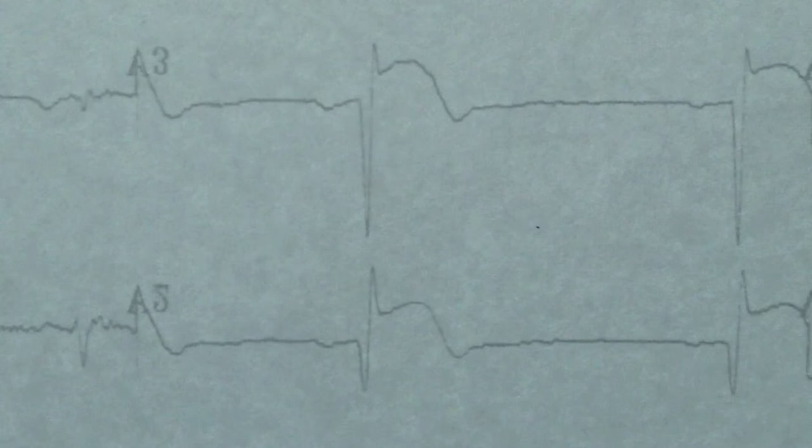So when you're looking at the EKG, you mirror it — you flip it and reverse it. Then after you flip it and reverse it, look in leads V1, V2, and V3, and you will see ST elevations. This is a sign of a posterior STEMI.